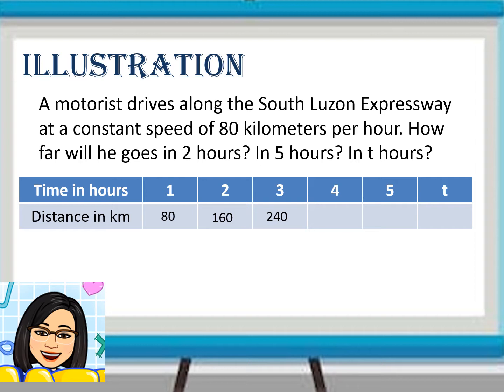So, what is the distance traveled in 4 hours? 4 times 80 gives us 320. Then, 5 times 80 will be 400 kilometers. And in general, T times 80.